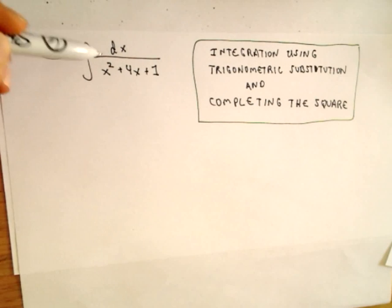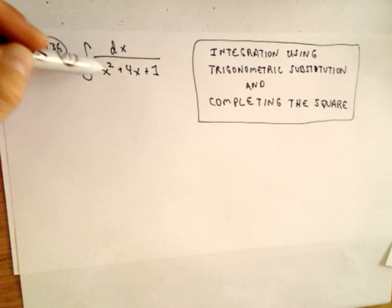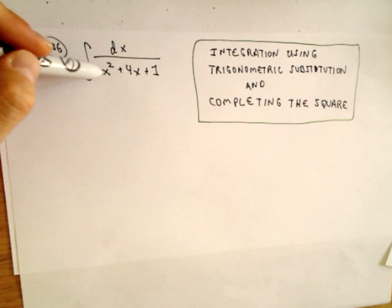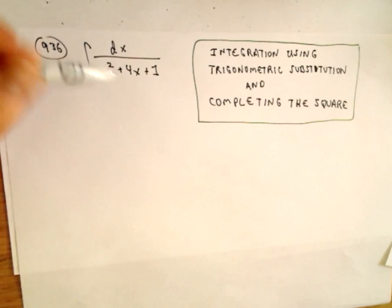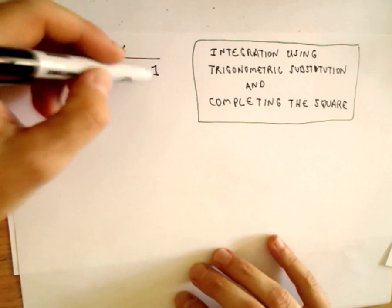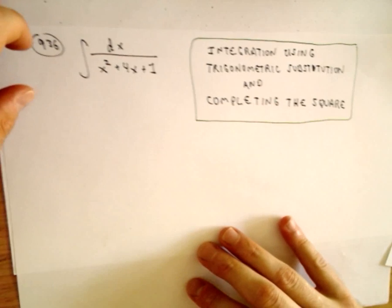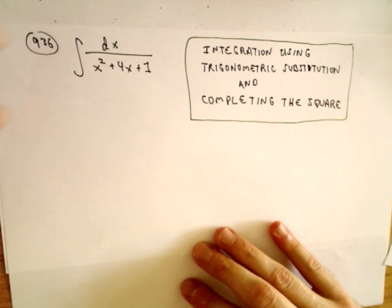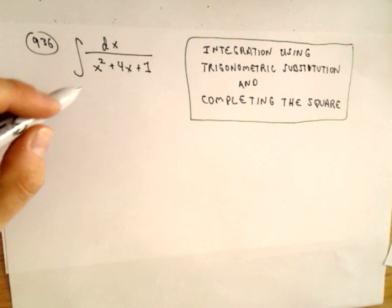At first glance, this looks like a partial fractions problem, just because I see this rational function, and x squared plus 4x plus 1 will certainly factor. It's not going to factor with nice whole numbers, but you could use the quadratic formula, find roots, and go about it that way. But that's not necessary — I'm going to do it a slightly different way.